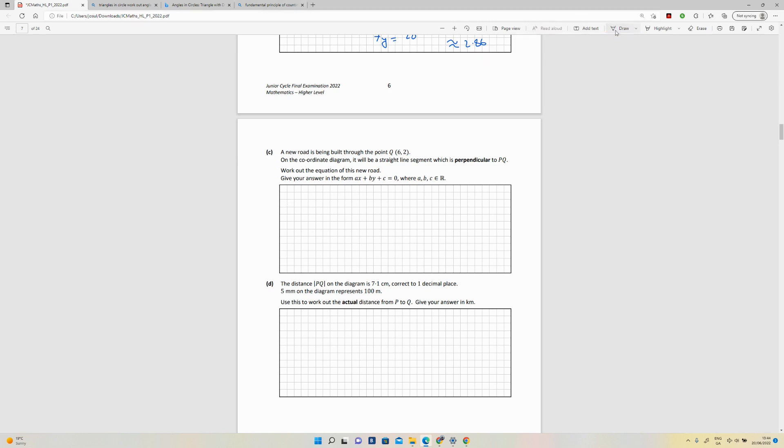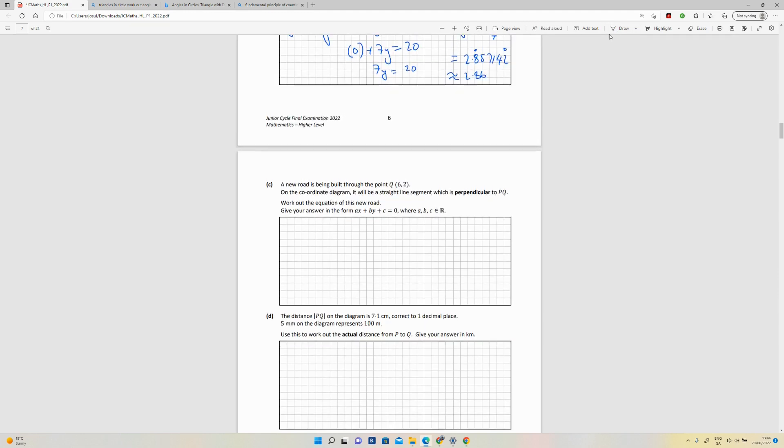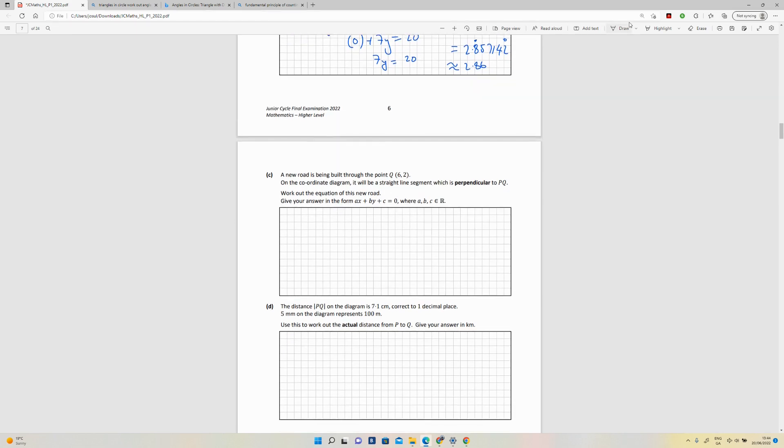So we should write down what the equation for PQ is. That is x plus 7y, and they've given us this equals 20. Let's find the slope of that, because this one is perpendicular to it. So if I find the slope of PQ, and this one is perpendicular, I'll be able to invert that and get the slope of the new line.